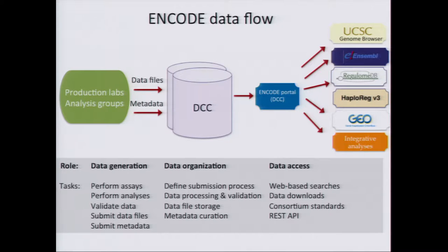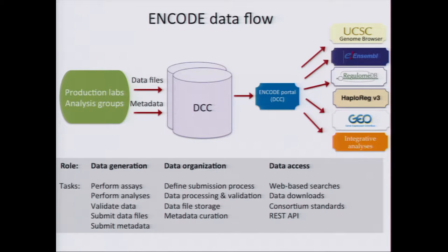As part of the ENCODE Consortium, there are production labs and analysis groups that generate the primary experimental data — the ChIP-seq data, DNA-seq data, RNA-seq data. There are also analysis groups that take this information and do some sort of analysis to identify genomic regions in the human and mouse genomes. All this information, including the data files and the metadata for those assays and files, are submitted to the Data Coordination Center.